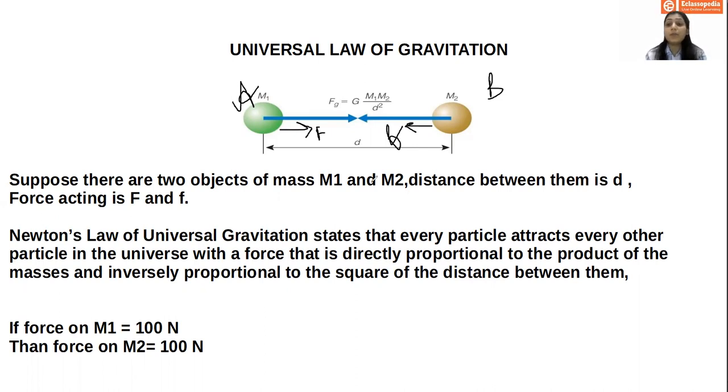So what does Newton's law of universal gravitation state? It states that every particle attracts every other particle in the universe with a force. Force is directly proportional to product of masses. So we will write that force Fg, that is gravitational force, is directly proportional to product of masses. Masses over here is M1 and M2.